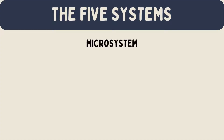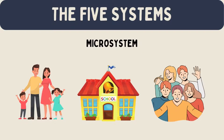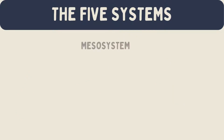The microsystem is the closest environment to a person. It includes places where people have direct interactions. Examples are family, school, friends, and neighbors. In the microsystem, a person has direct contact and relationships. These interactions have a big impact on development.